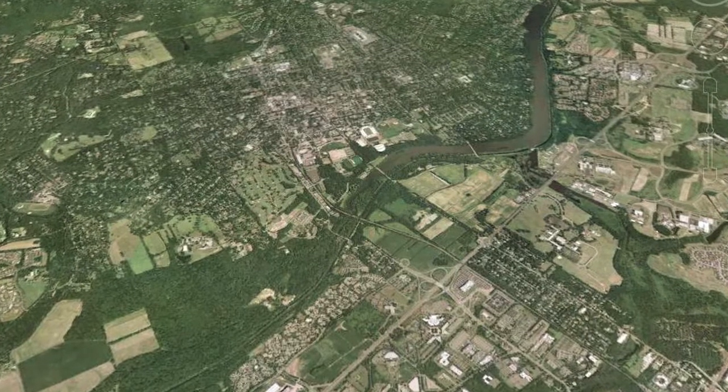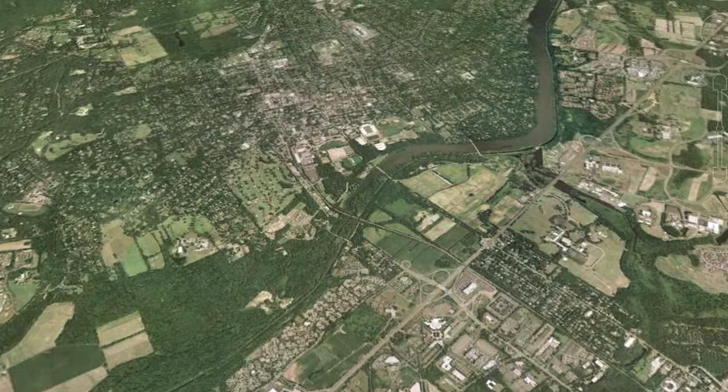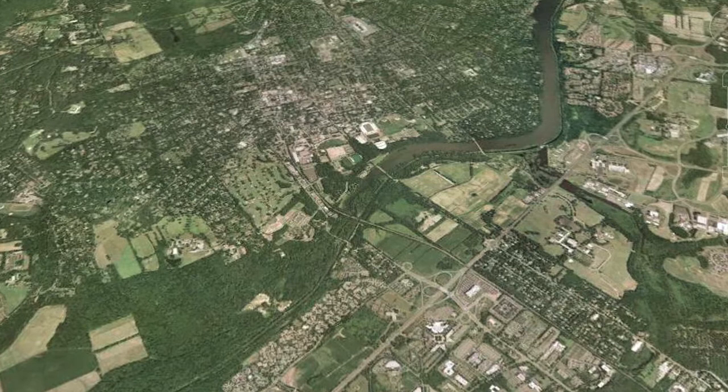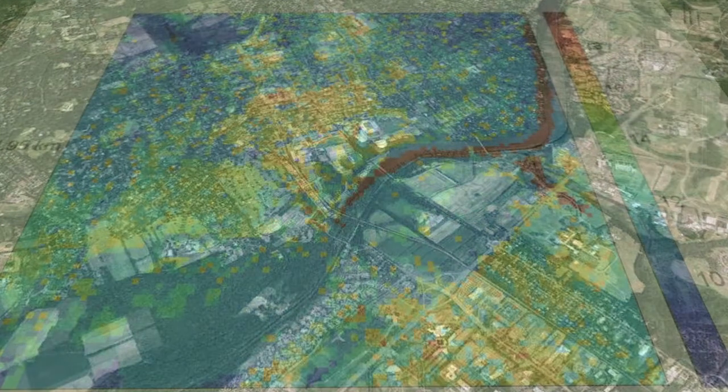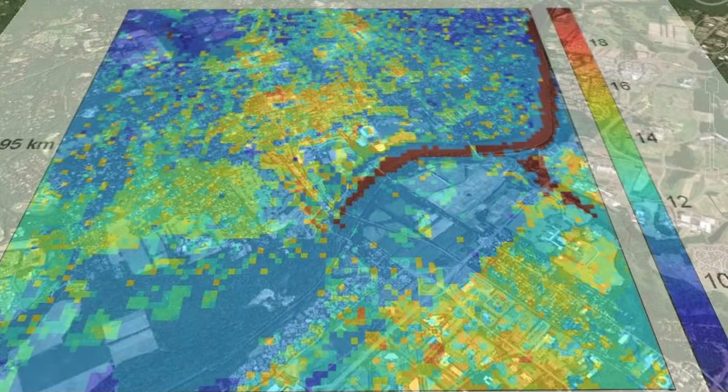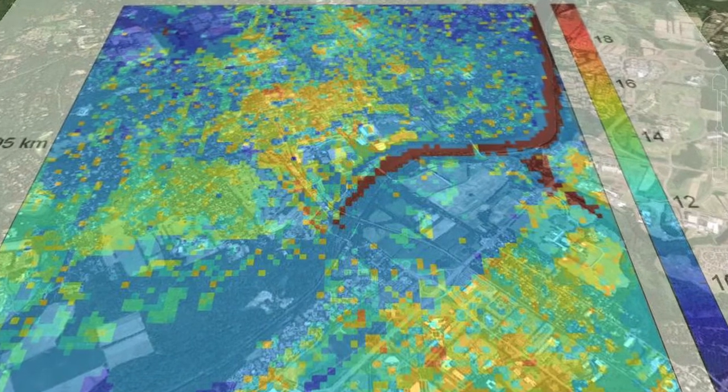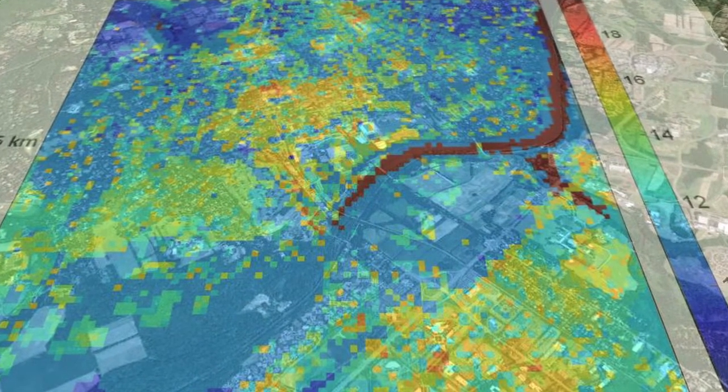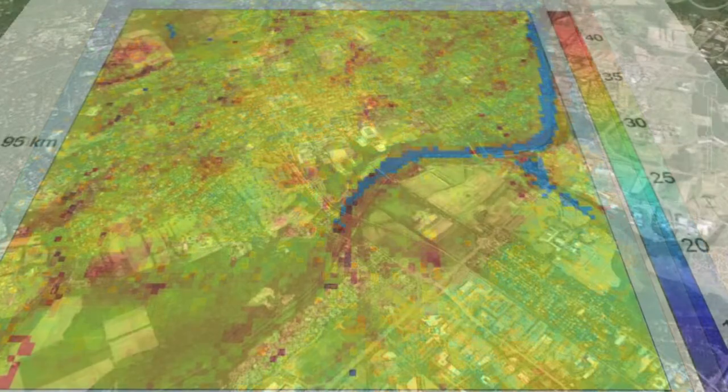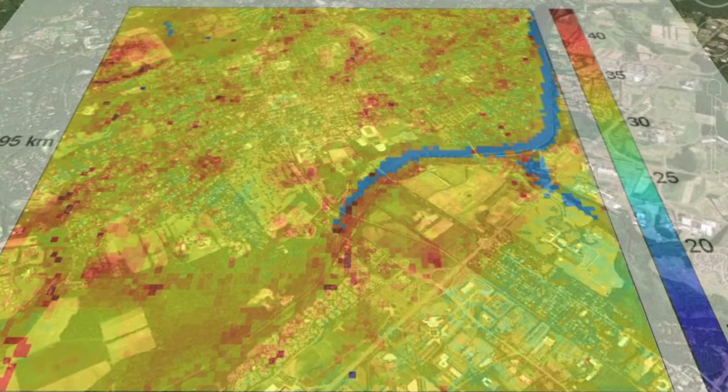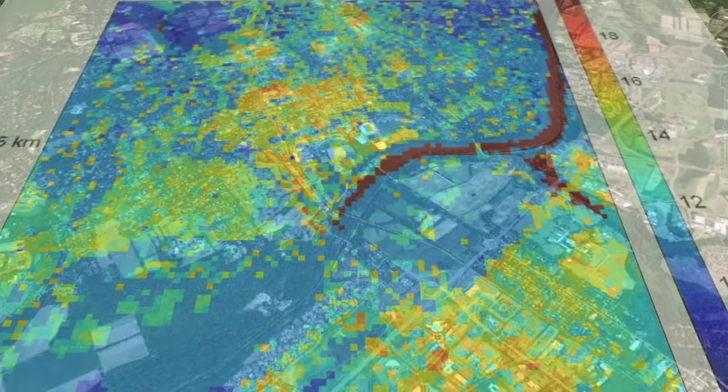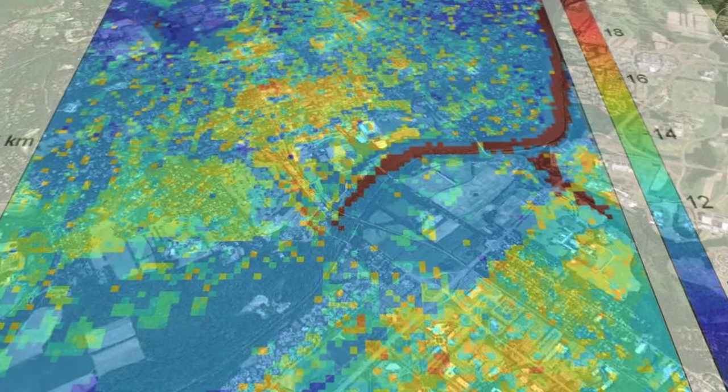These are computer model outputs of the surface temperature over Princeton. What we see is first Lake Carnegie, which is hotter than the earth's surface during the night and cooler during the day. If you look at the earth's surface, you will see that the vegetated parts are always cooler than the built terrain or the buildings.